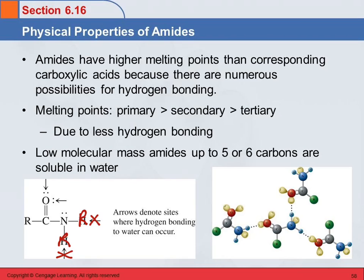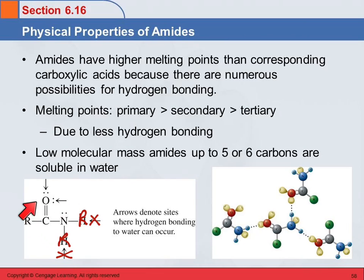We've been talking about hydrogen bonding. Amides can hydrogen bond, and so it is very understandable that the smaller amides are going to be soluble in water. Now, even a tertiary amide can still hydrogen bond with water because the water has hydrogens to bond with its oxygen. So that's why even the tertiary amides are going to be soluble in water — the smaller ones, up to about five or six carbons.